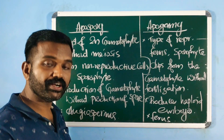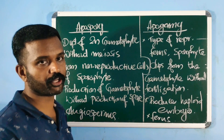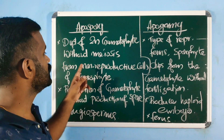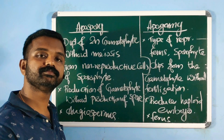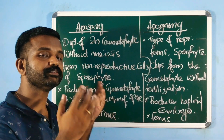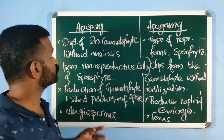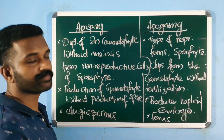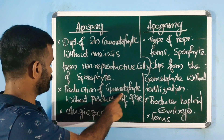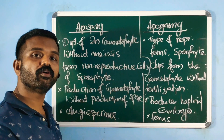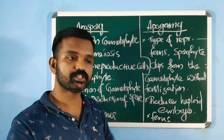Remember, usually a gametophyte is haploid, so here a diploid gametophyte is produced from non-reproductive or vegetative cells of the sporophyte. That is apospory — production of a gametophyte without the production of a spore.